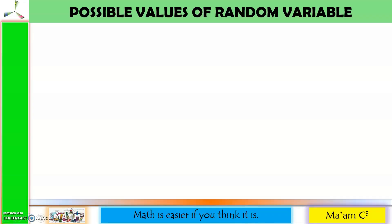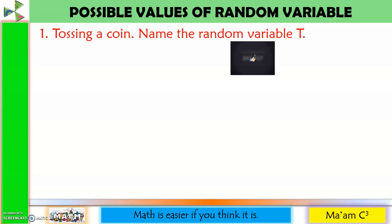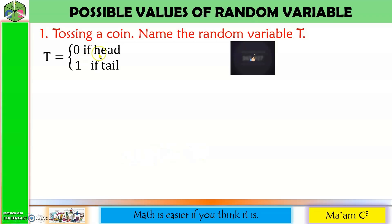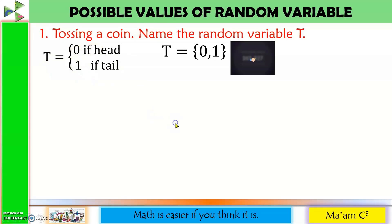Let us talk about possible values of a random variable. Number one: tossing a coin — name the random variable T. When you toss a coin, the possible outcomes are head or tail. Since random variable should be quantifiable, we assign values: 0 if head and 1 if tail. So the possible values of random variable T are 0 and 1.